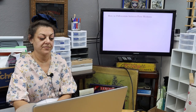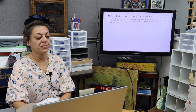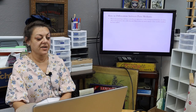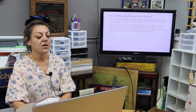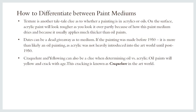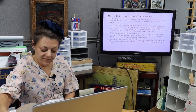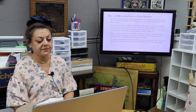How to differentiate between the paint mediums: watercolor paintings will have a translucent appearance with overlapping border lines of color, often with pencil or ink visible beneath. Watercolors are rarely opaque unless other mediums have been added. Acrylics and oils can be more difficult to differentiate — oils have softer, less defined edges due to the paint's slow drying time and its oil composition. Conversely, acrylics will have sharper edges and a plastic-like appearance, and will also tend to have more vibrant colors while oils can be darker and murkier. Dates can also be a dead giveaway: if the painting was made before 1950, it's more than likely an oil painting, as acrylic was not heavily introduced into the art world until post-1950.